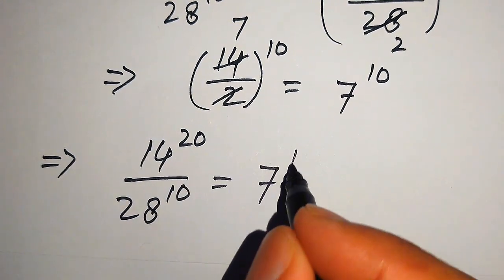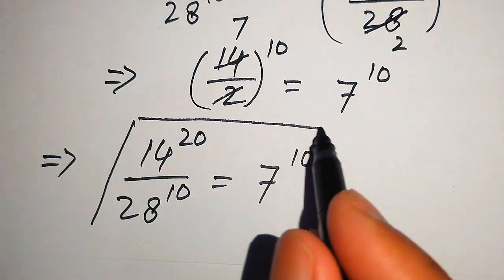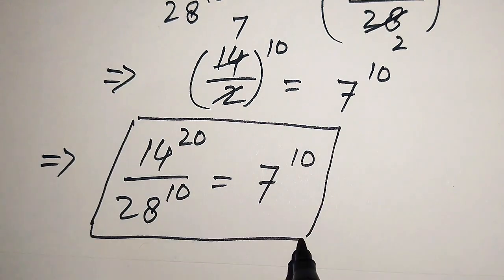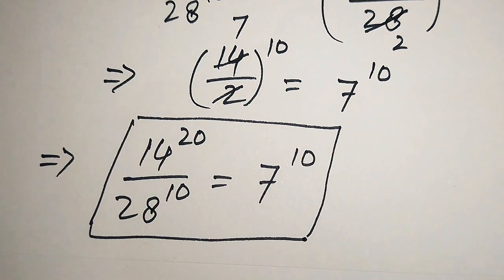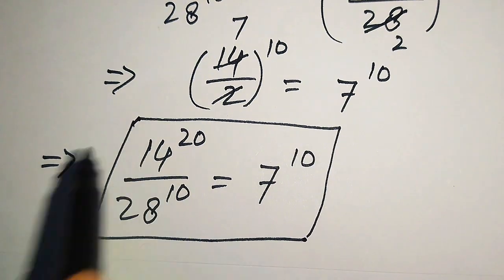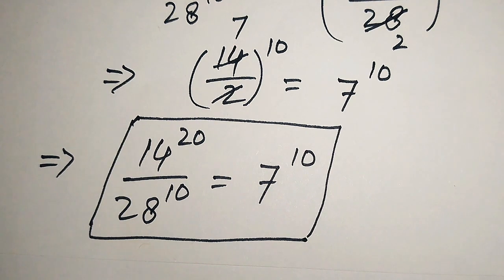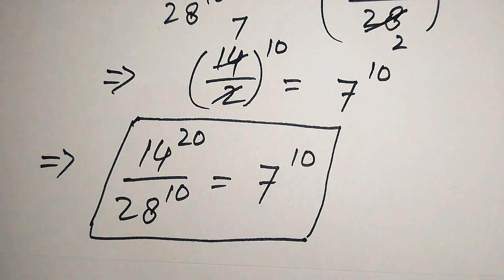So, 14^20 ÷ 28^10 equals 7^10. This is the final simplified form. I hope you liked both methods. If you have another method in mind, please write it in the comment section. Thank you for watching — please subscribe to my channel for more exciting videos!